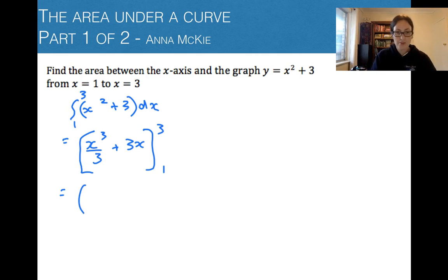Now we substitute each of them in using round brackets. We've got 3³/3 + 3(3), take away where you substitute x = 1, so 1³/3 + 3(1).